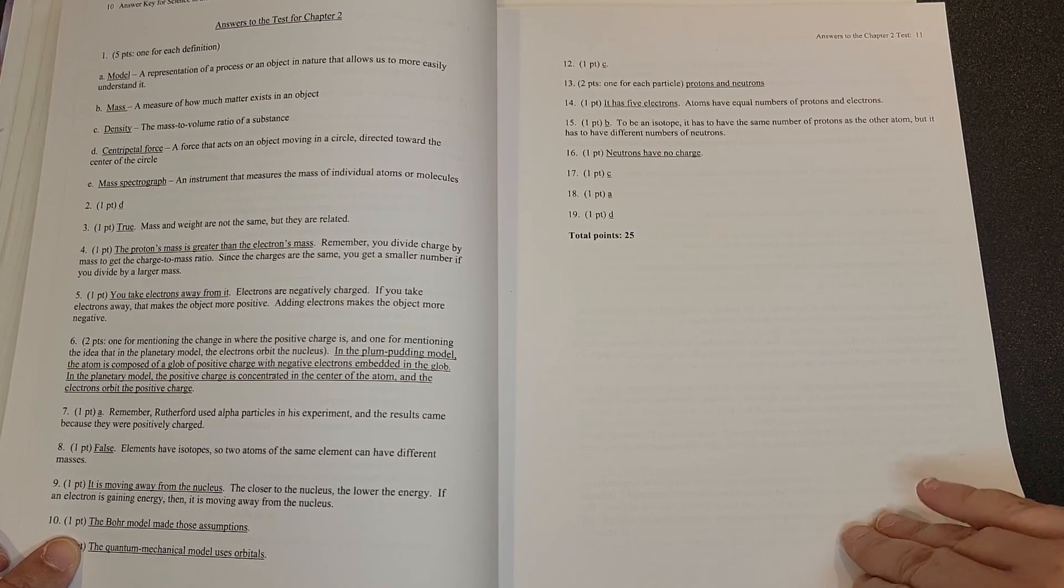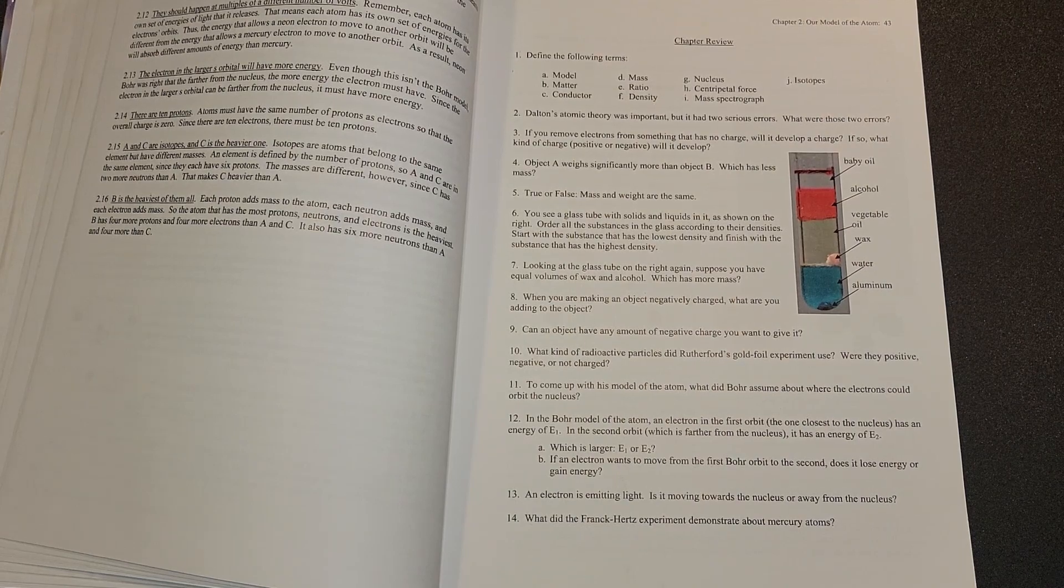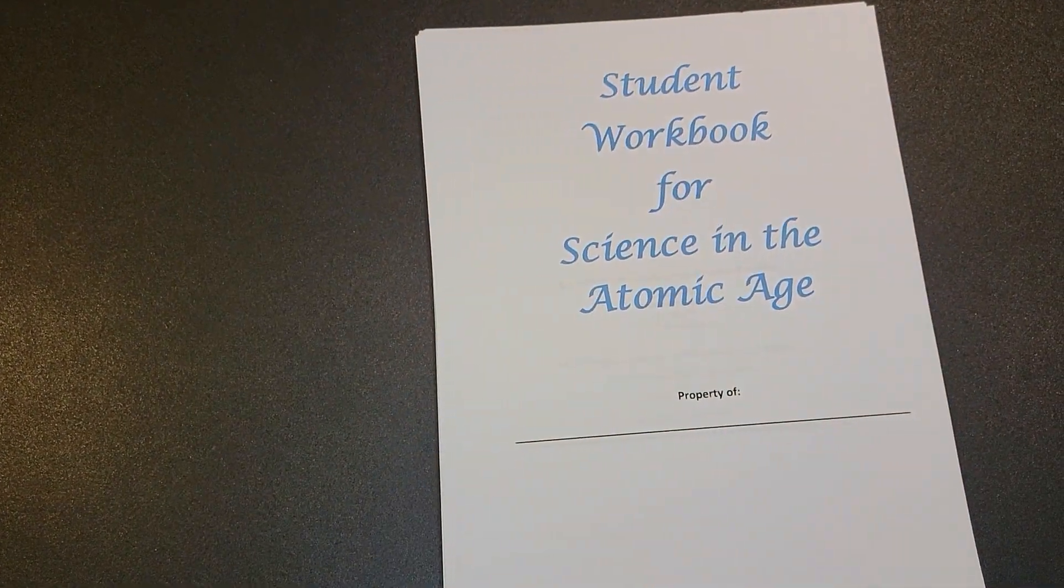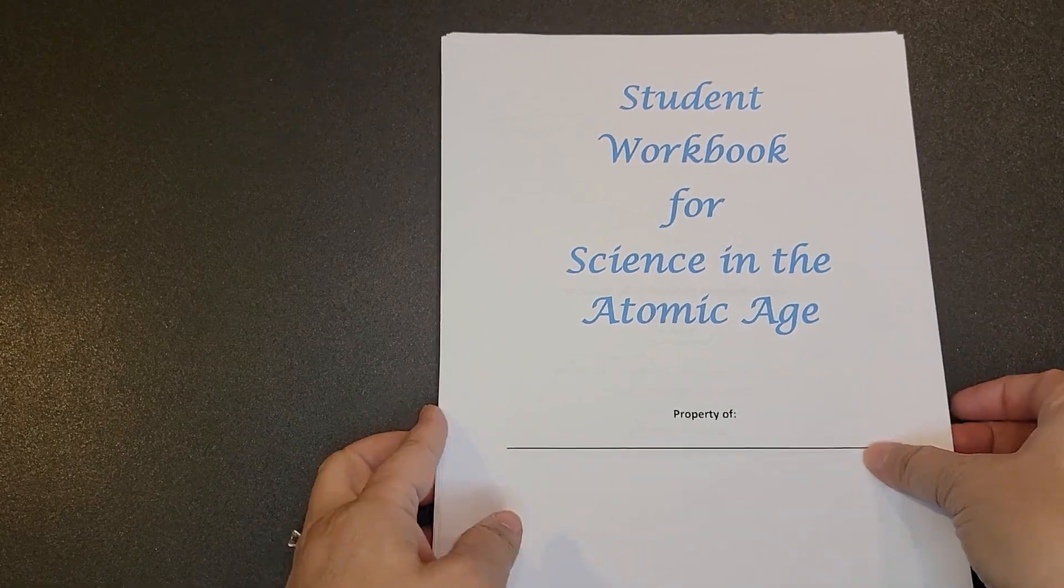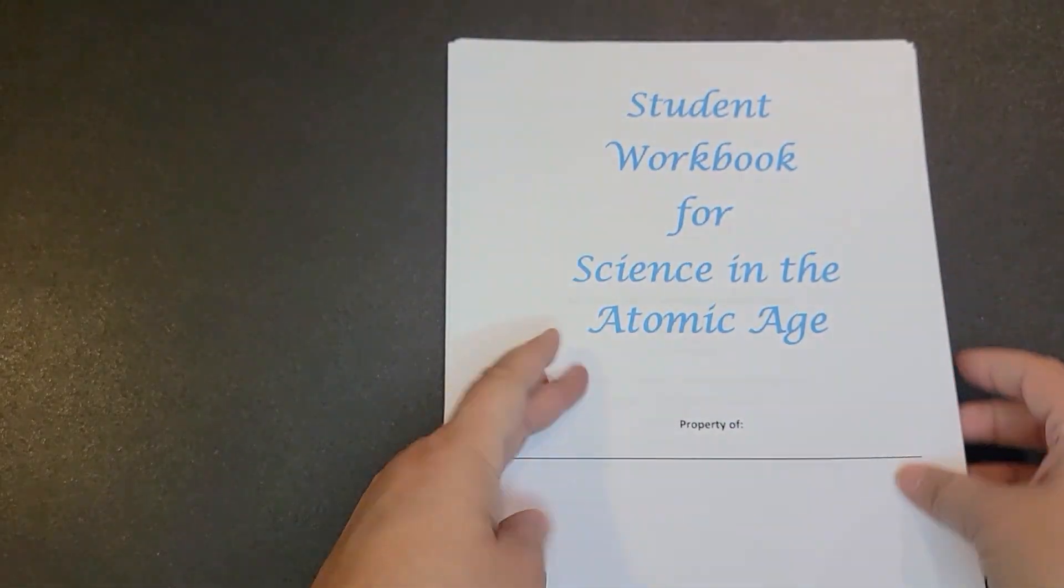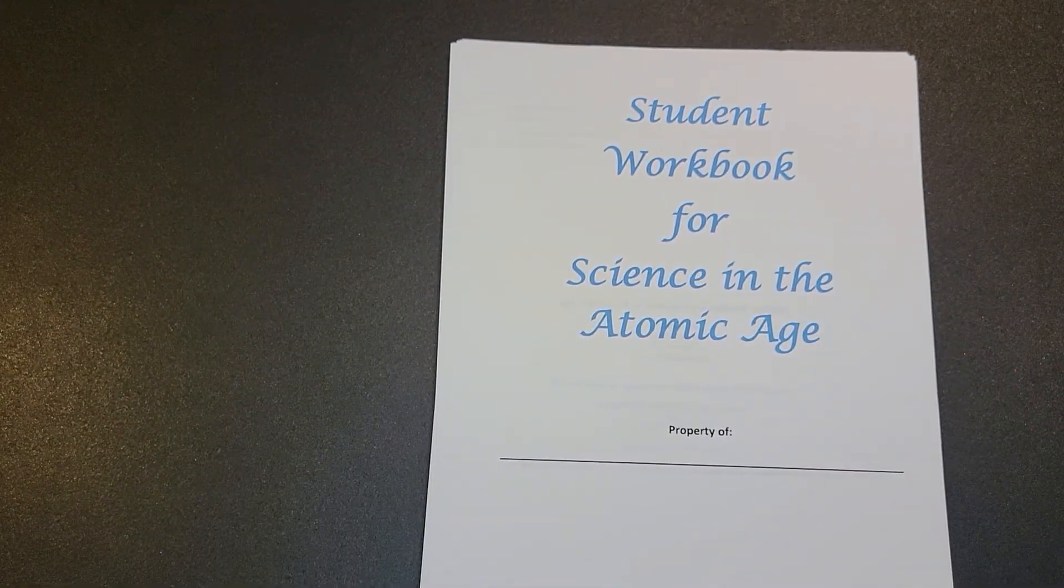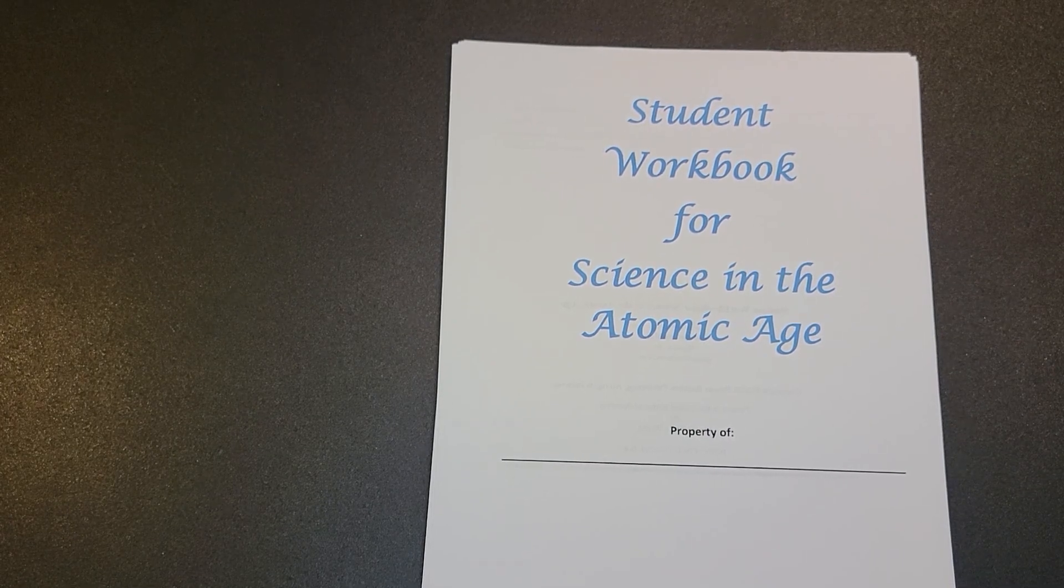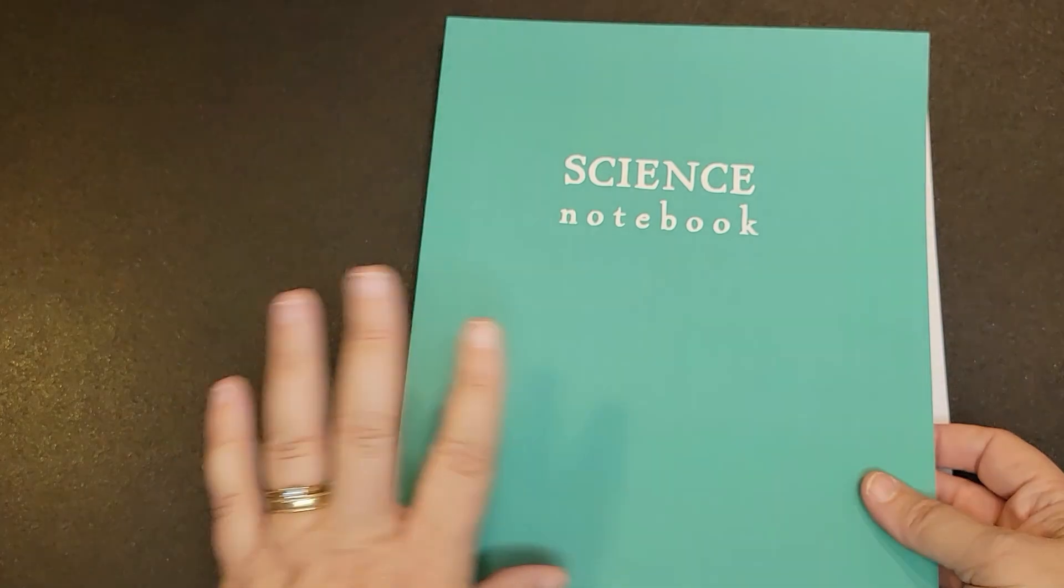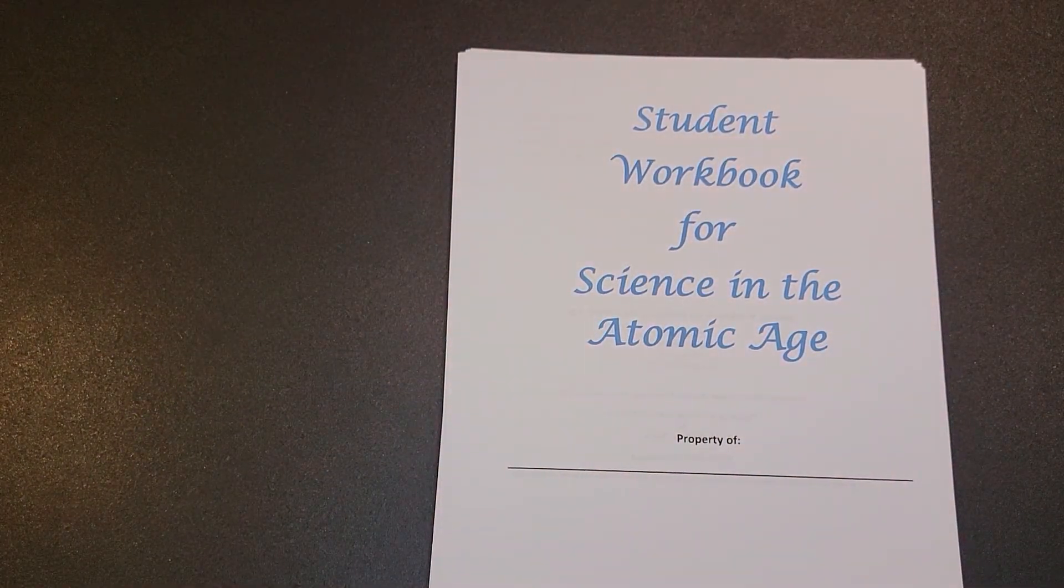Now something else that I wanted to mention is regarding the workbook. I did not purchase the workbook because you can get a free PDF download from their website and then just print out the workbook. One thing to note about the workbook is that once you get past page 172, it's basically just blank pages, and that is for your laboratory experiments. And so I purchased the science notebook. This is what we're going to use for our laboratory experiments, and we're going to keep it all in here versus those blank pages that are included in the workbook.